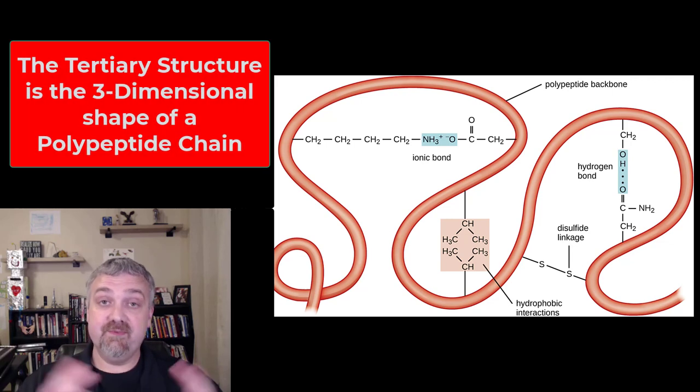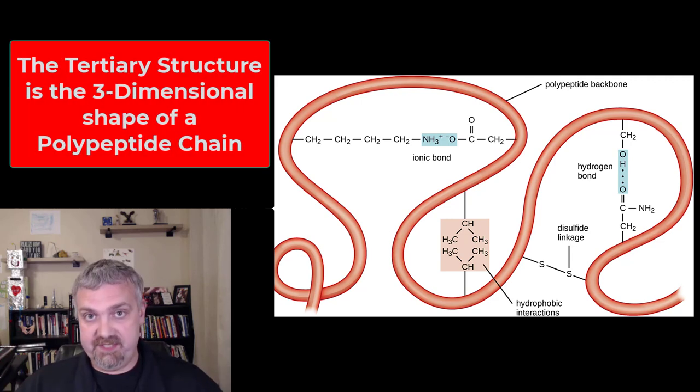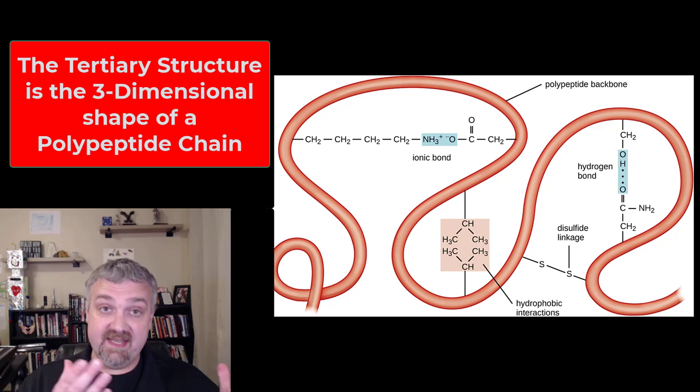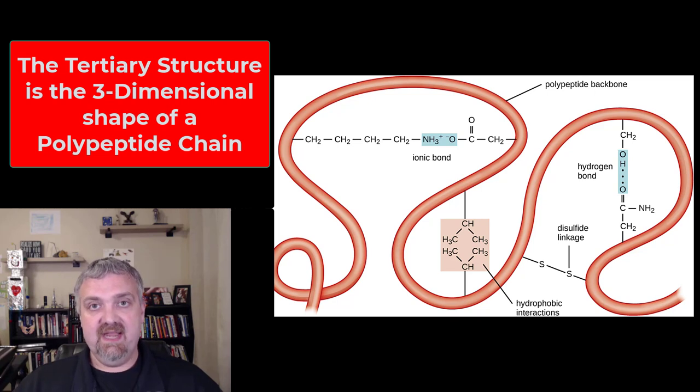The tertiary structure is the three-dimensional structure of the protein. This is obviously very important because the shape and structure of a protein is critical to its function. This is where you get that lock and key analogy. If the protein has the right structure, it's the right-shaped lock or key and will do its job. If it has the wrong three-dimensional structure, it can't do its job. If I try to put the key for my front door in somebody else's front door, it's not going to work, right?